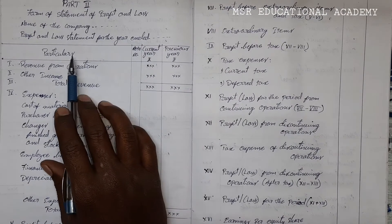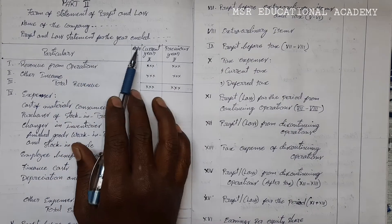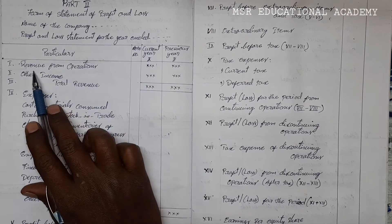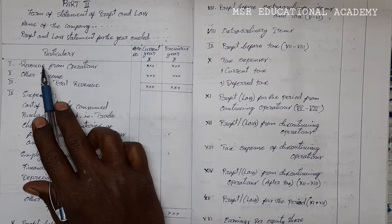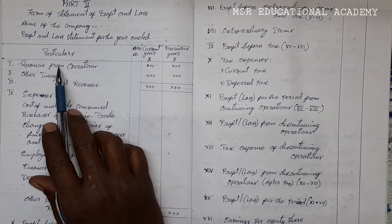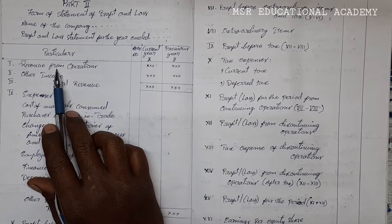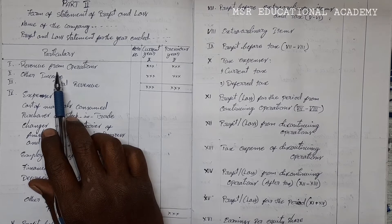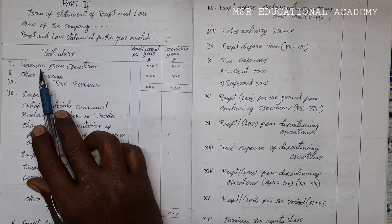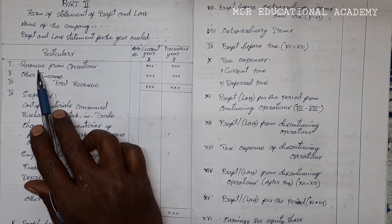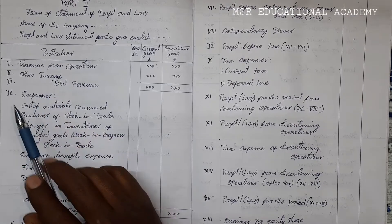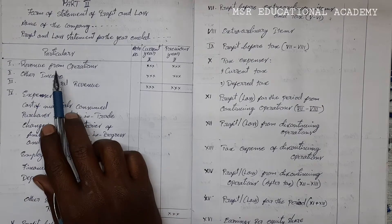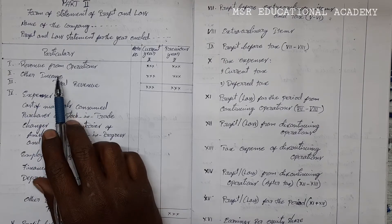The format has columns for particulars, note number, current year amounts, and previous year amounts. In this profit and loss statement, it starts with income. Income is segregated into two types: revenue from operations and other income. These are the two main heads of income.